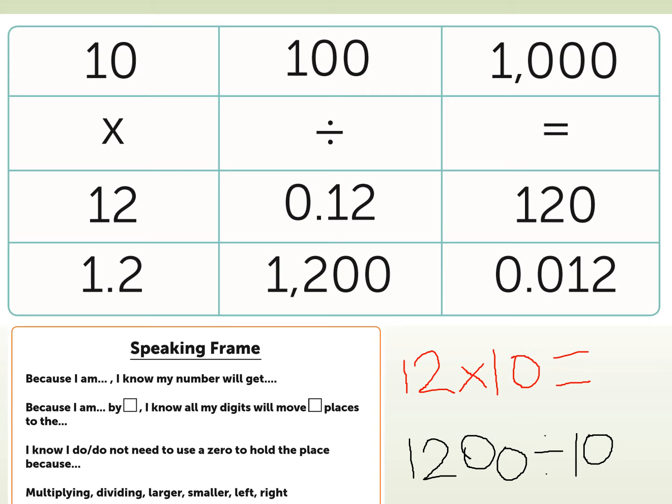There's also a speaking frame here. Because I'm multiplying, I know my number will get bigger. Because I am multiplying by 10, I know my digits will move one place to the left. I do or do not need a placeholder because, and there's some words down there that you might want to use. So that speaking frame is really useful as well. So pause, spend a few minutes writing out some calculations.